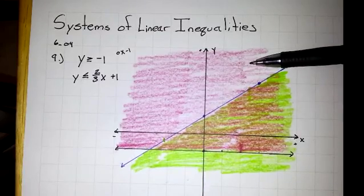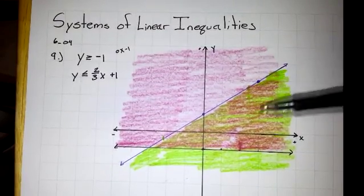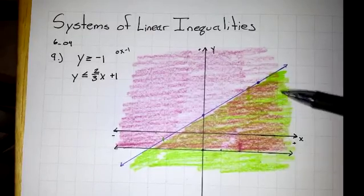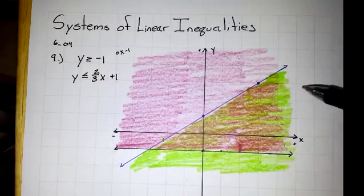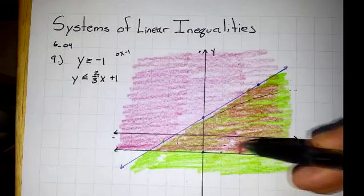One line gave us the upper region in red. Another line gave us the lower region in green. However, we need the intersection of those two. We need to know where it's both red and green. That is right here.